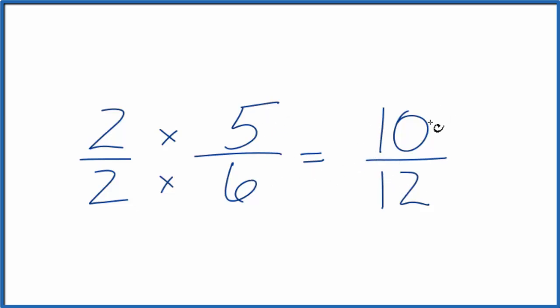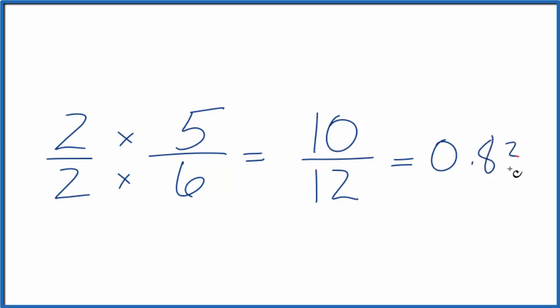If you divide 5 by 6 or 10 by 12, you get 0.83, and that 3 repeats.